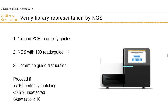Before starting the screen, it's very important to do a quality control step by sequencing the cloned library using next-generation sequencing to make sure all the expected guides are present. We sequence at a depth of 100 reads per guide. If you've followed all the steps and your oligo manufacturer is good, about 70% of guides should be perfectly matching, with fewer than 0.5% undetected. The skew ratio — the top 10% versus bottom 10% of reads — tells you how skewed your library distribution is.